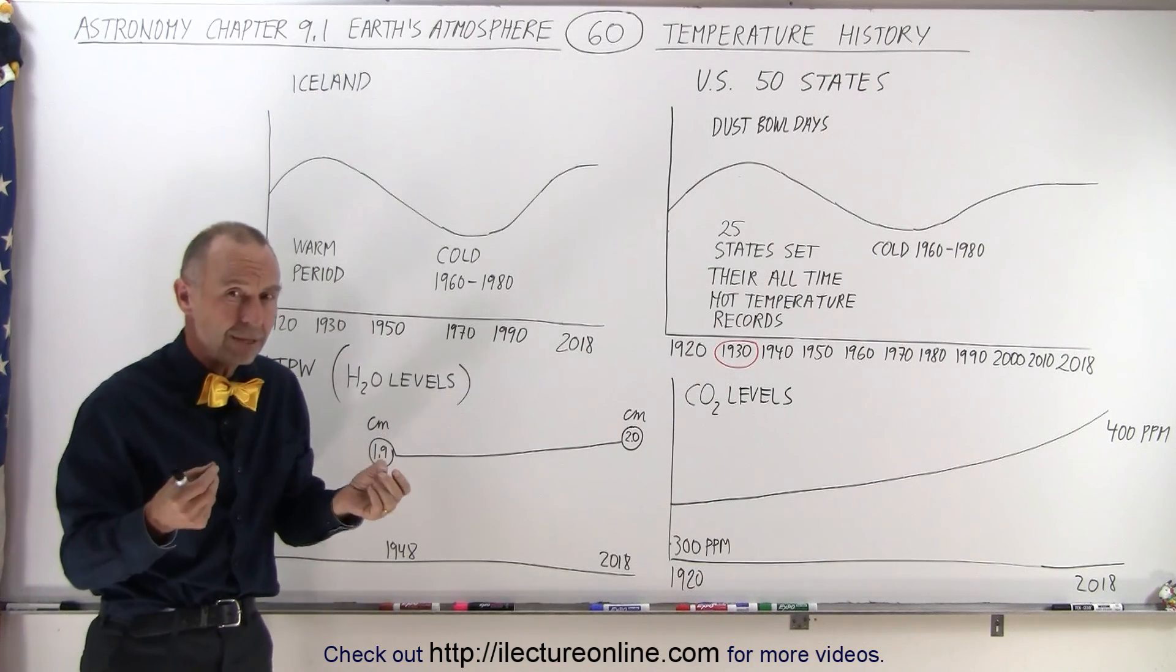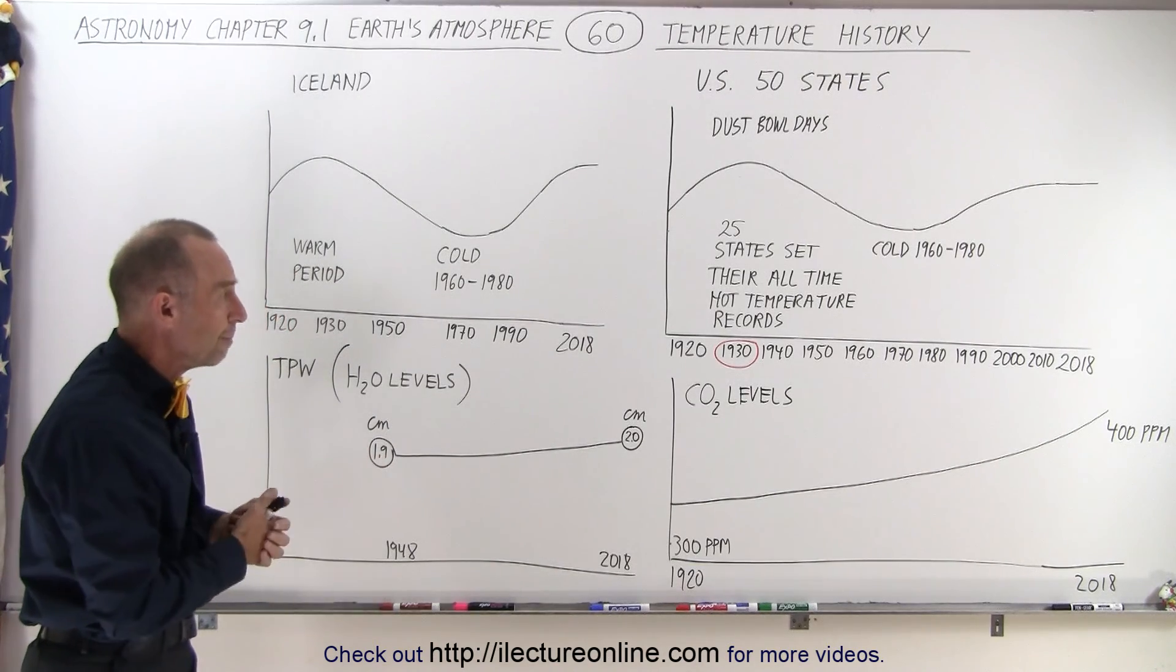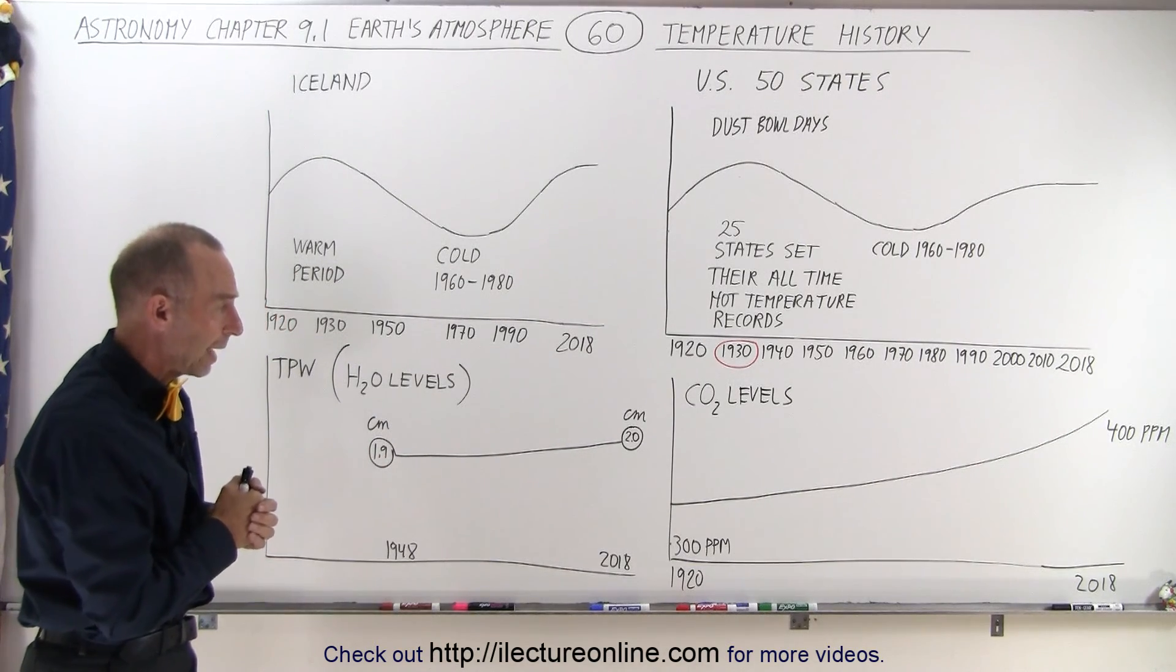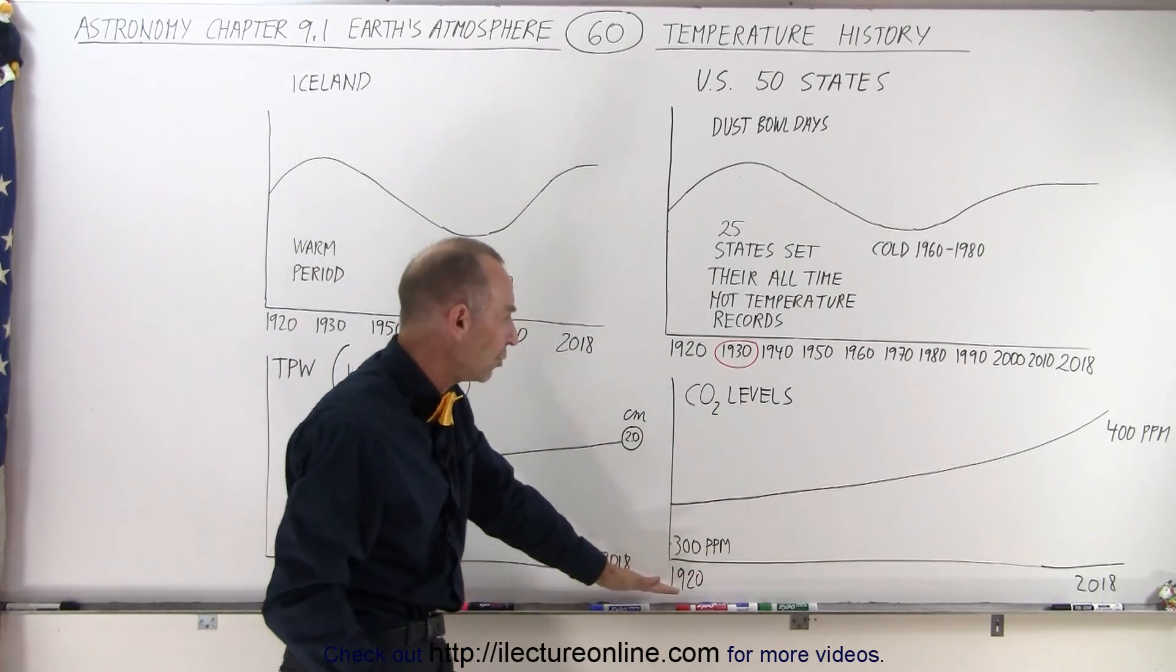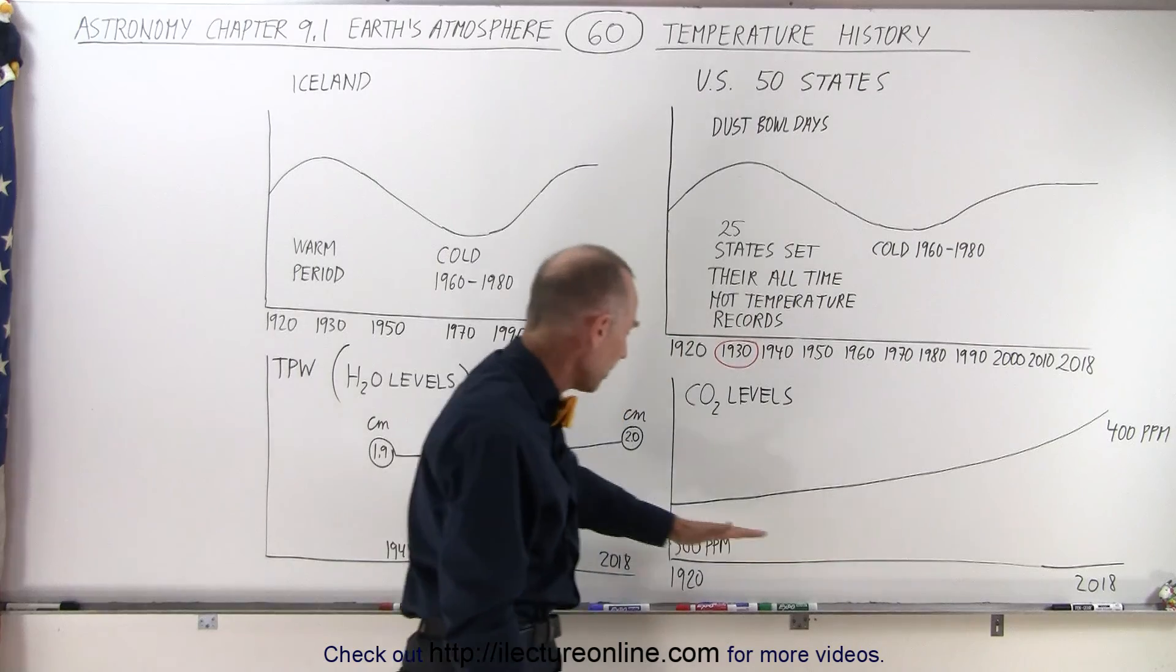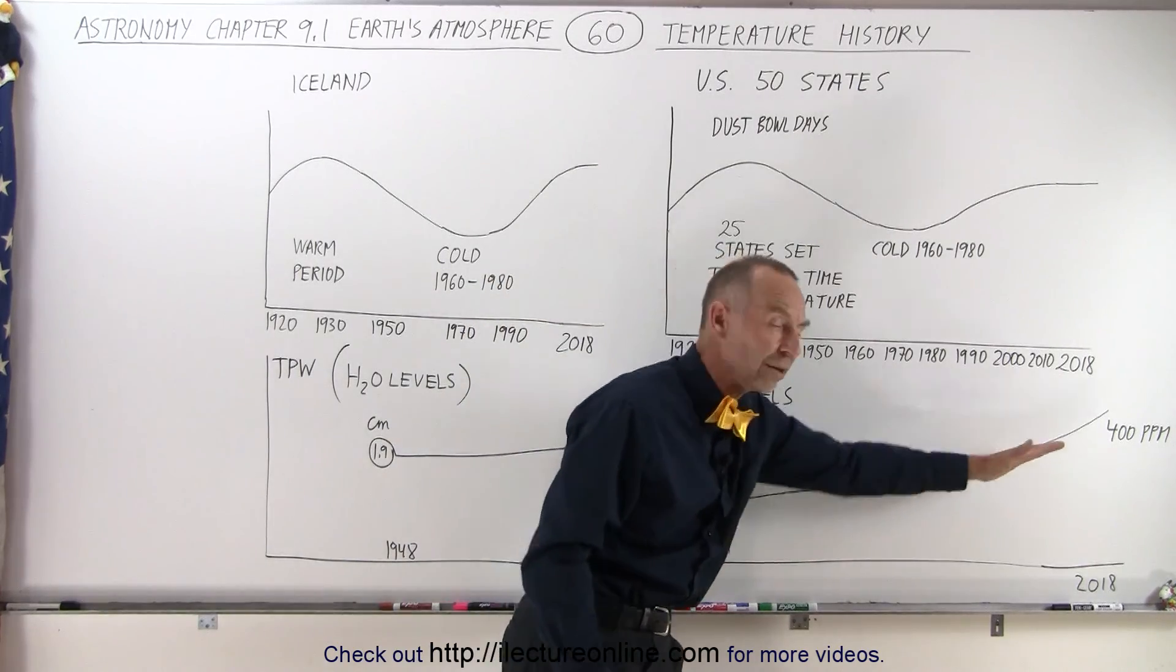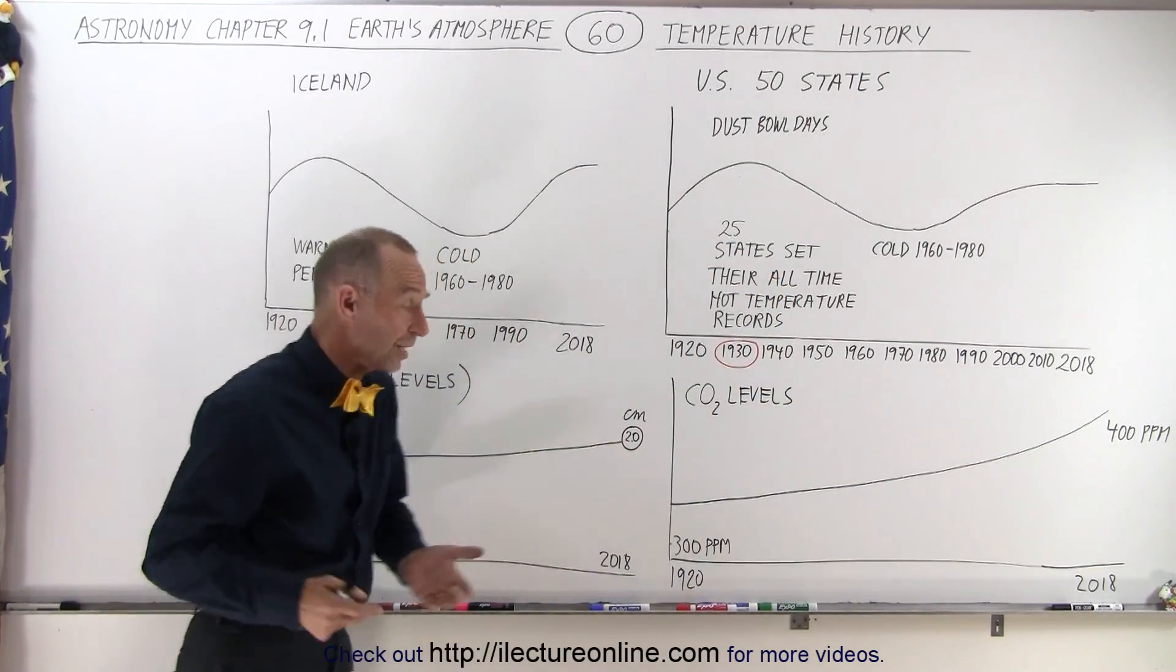So let's compare the increase in carbon dioxide levels since about the 1920s to current levels, from about 300 parts per million to about 400 parts per million. That's a significant increase.